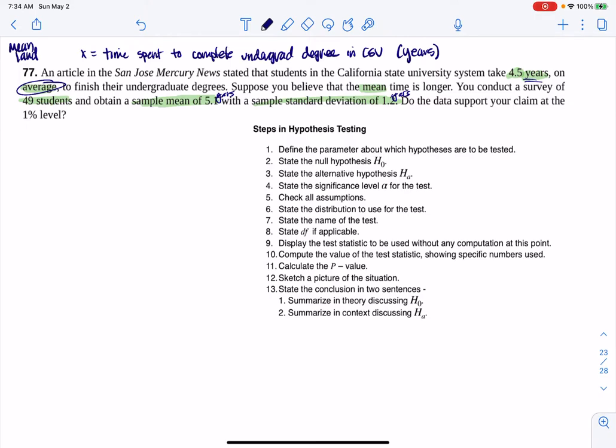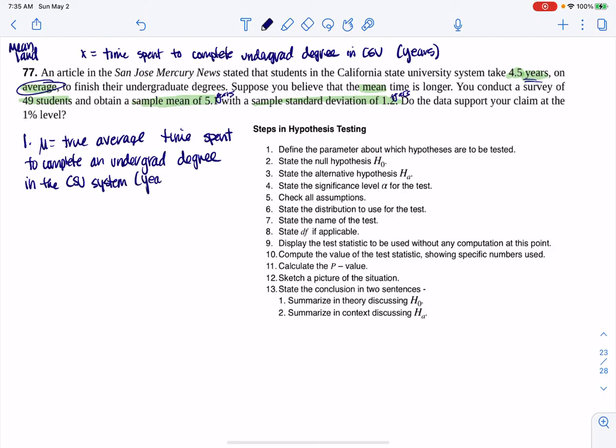Do the data support the claim at the one percent level? Let's start off with our 13 steps. For step one, I'm going to define my parameter mu. This is going to be the true average time spent to complete an undergrad degree in the CSU system, and the units here are years.